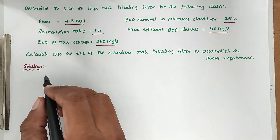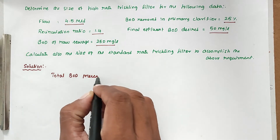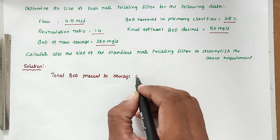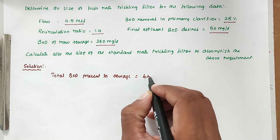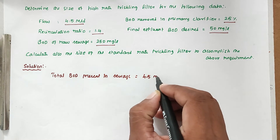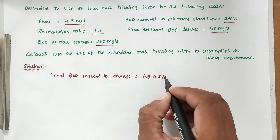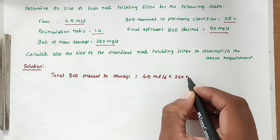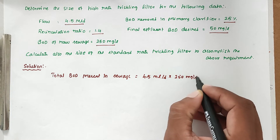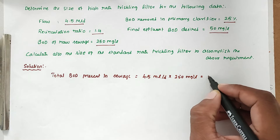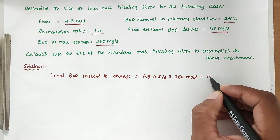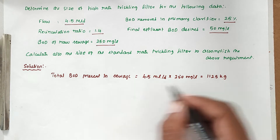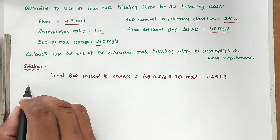First, calculate the total BOD present in the raw sewage: 4.5 million liters per day multiplied by 250 milligrams per liter gives a total BOD of 1125 kg.